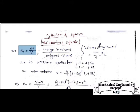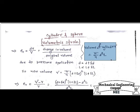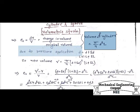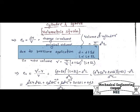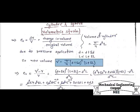The change in volume will be new volume minus original volume, divided by original volume. Volume of cylinder, as we know from the basic mathematical formula, is pi/4·d²·L, where d² represents the diameter of the cylinder and L is the length of the cylinder. Due to internal pressure, the change in diameter will be D plus delta D, and change in length will be L plus delta L. When we put these new values into the new volume expression, the new volume V' equals pi/4·(D + delta D)²·(L + delta L).